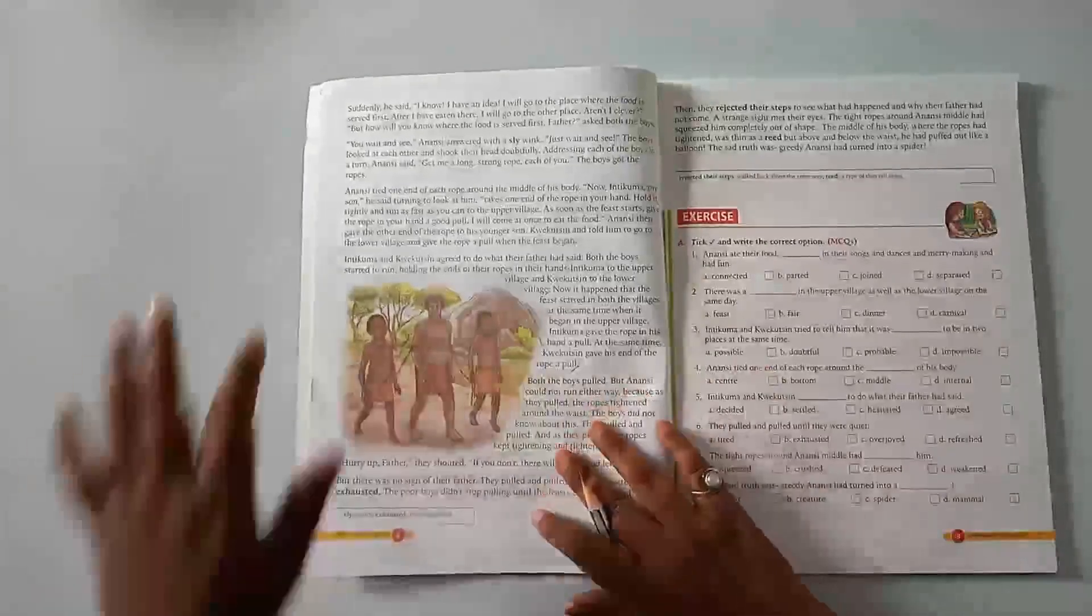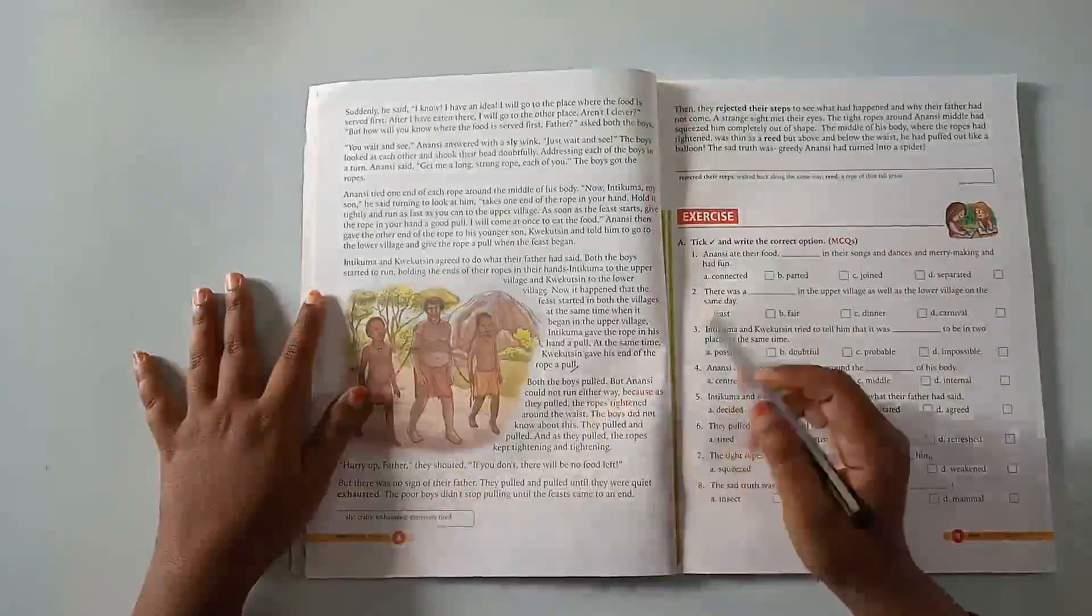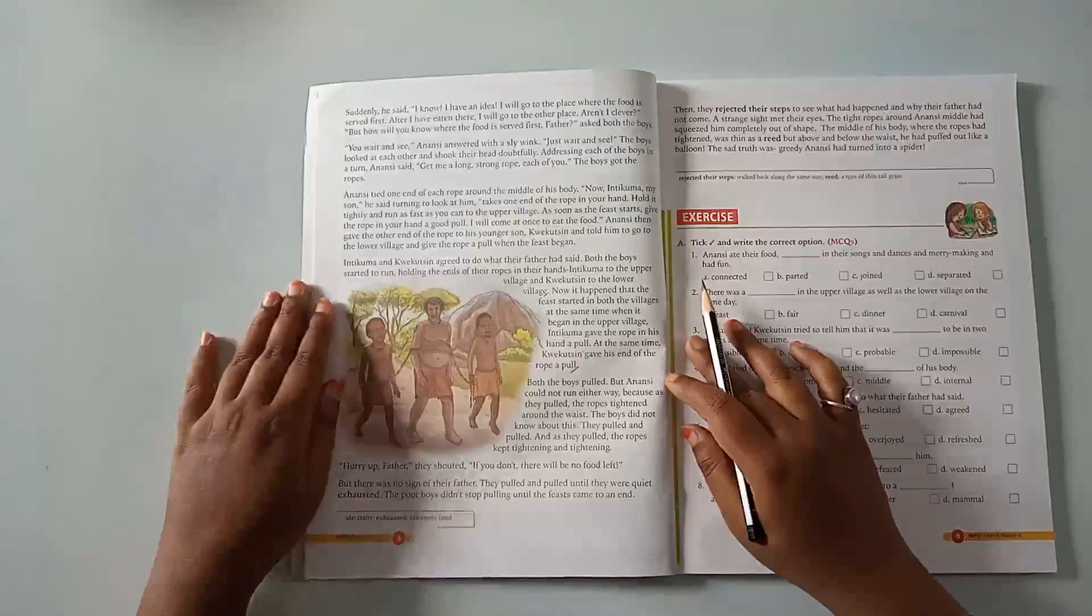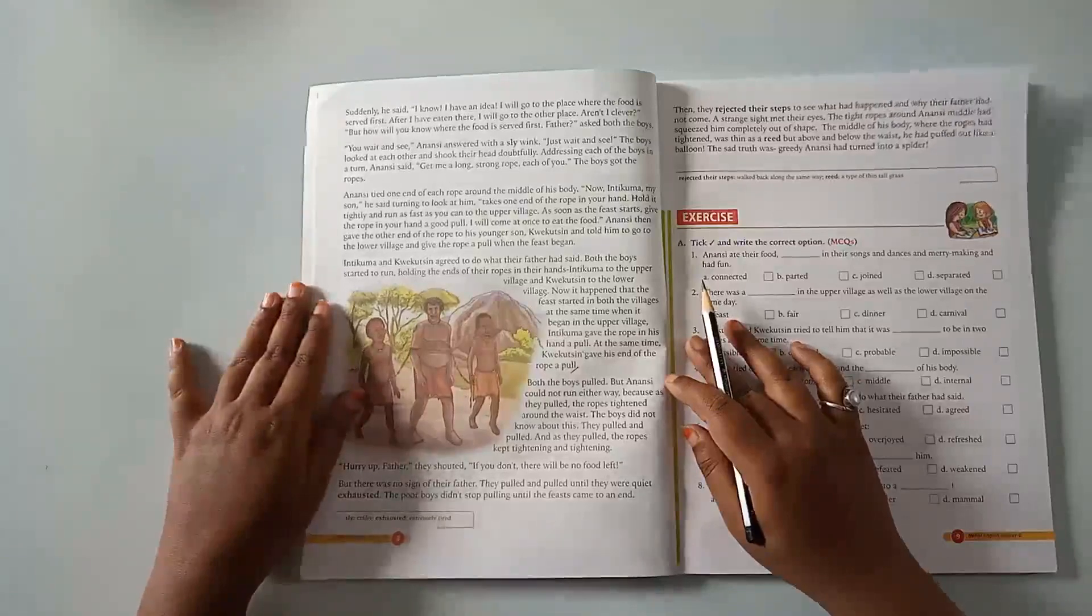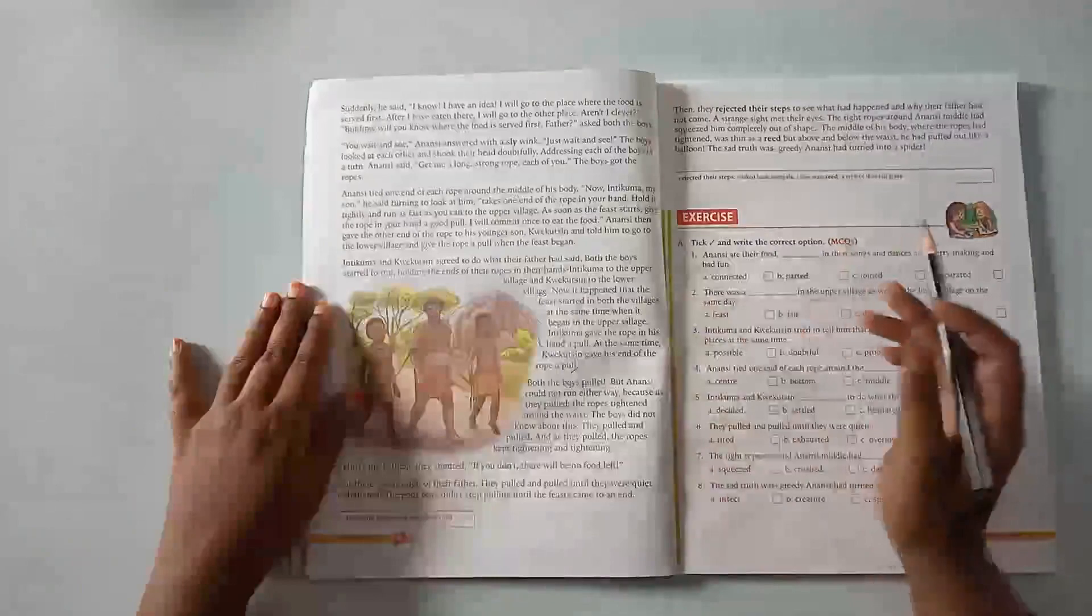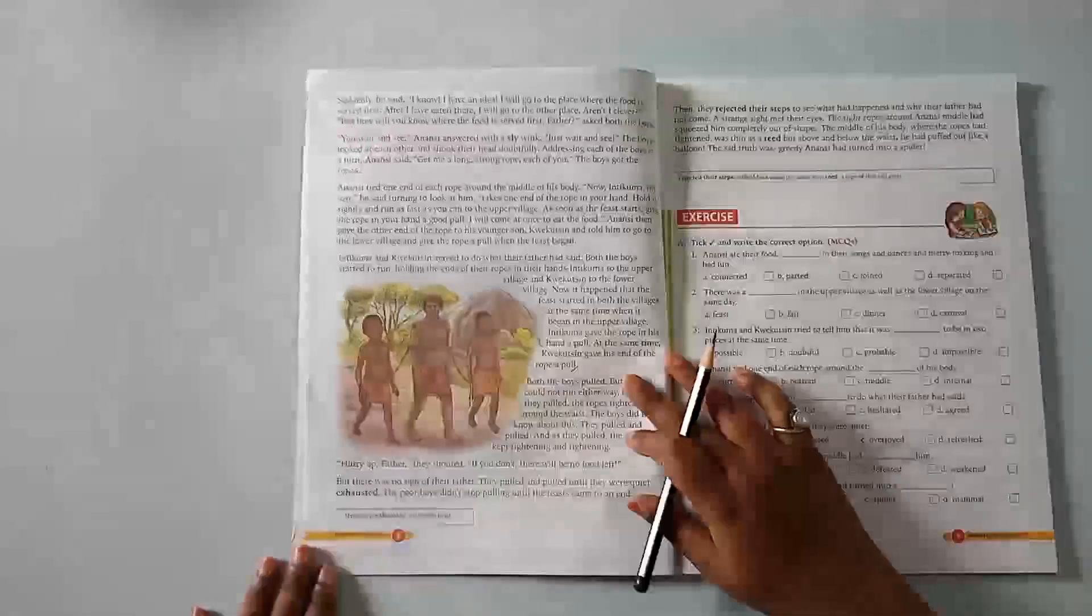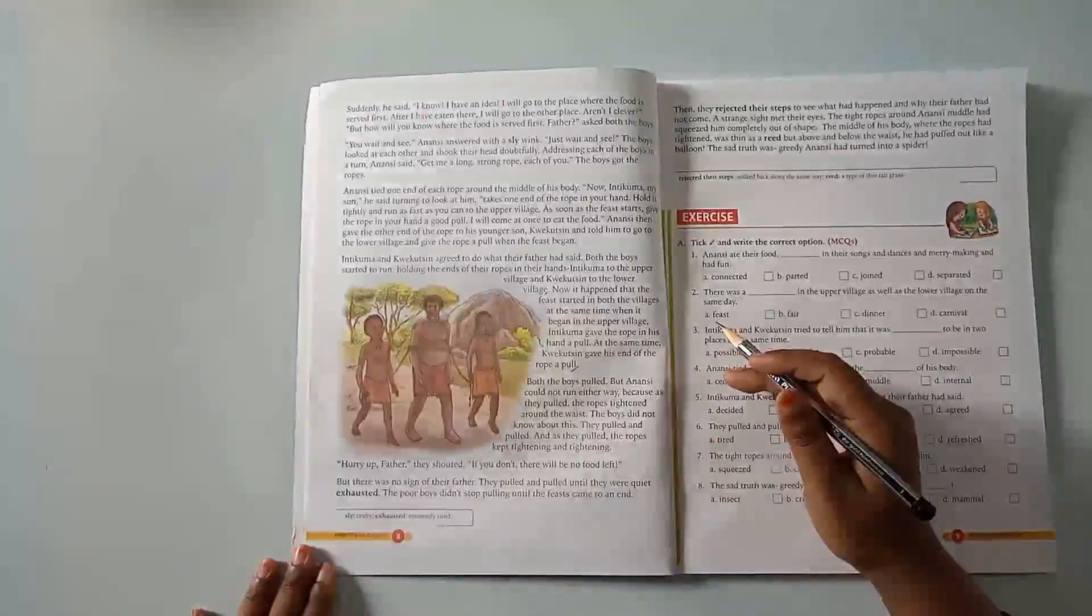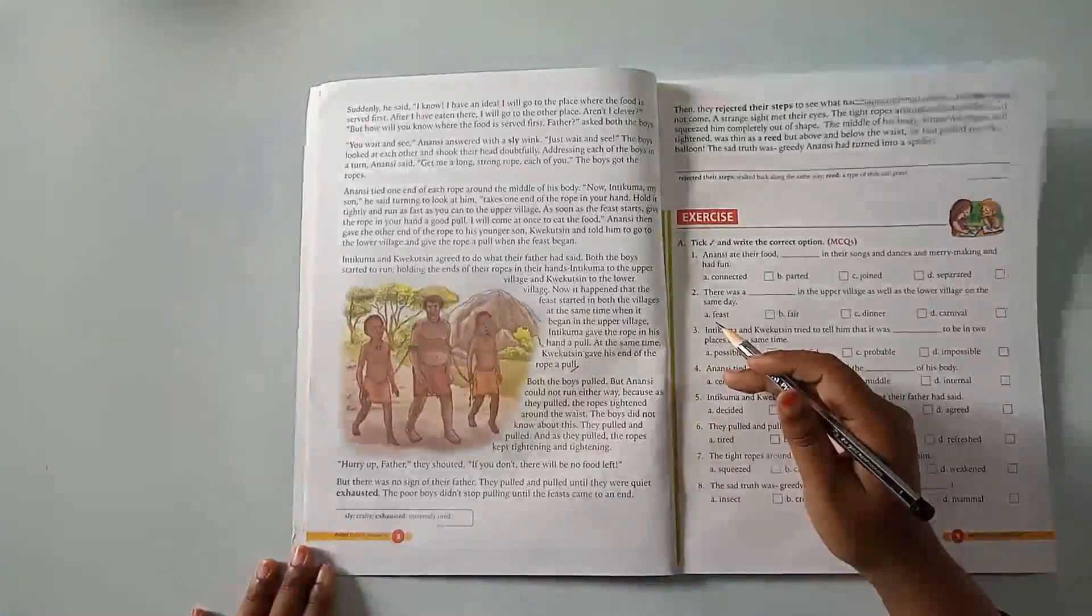Both the boys pulled, but Anansi could not run either way. Because as they pulled, the ropes tightened around the waist. The boys did not know about this. They pulled and pulled and as they pulled, the ropes kept tightening and tightening. Hurry up, father, they shouted. If you don't, there will be no food left. But there was no sign of their father. They pulled and pulled until they were quite exhausted. The poor boys didn't stop pulling until the feast came to an end.